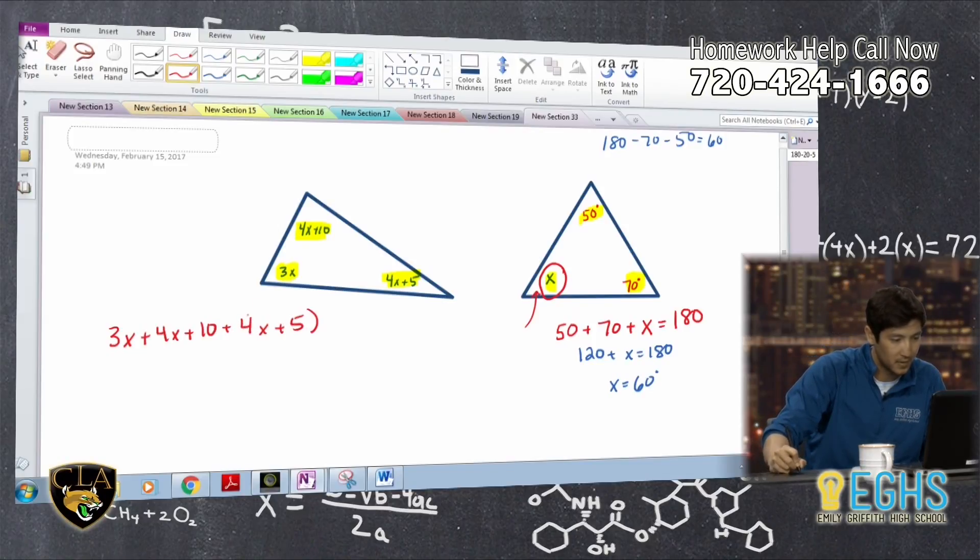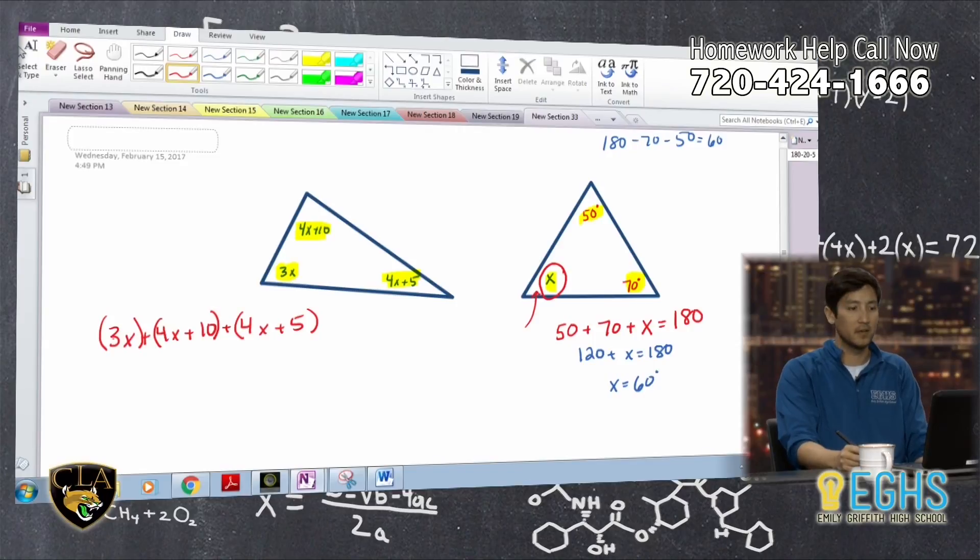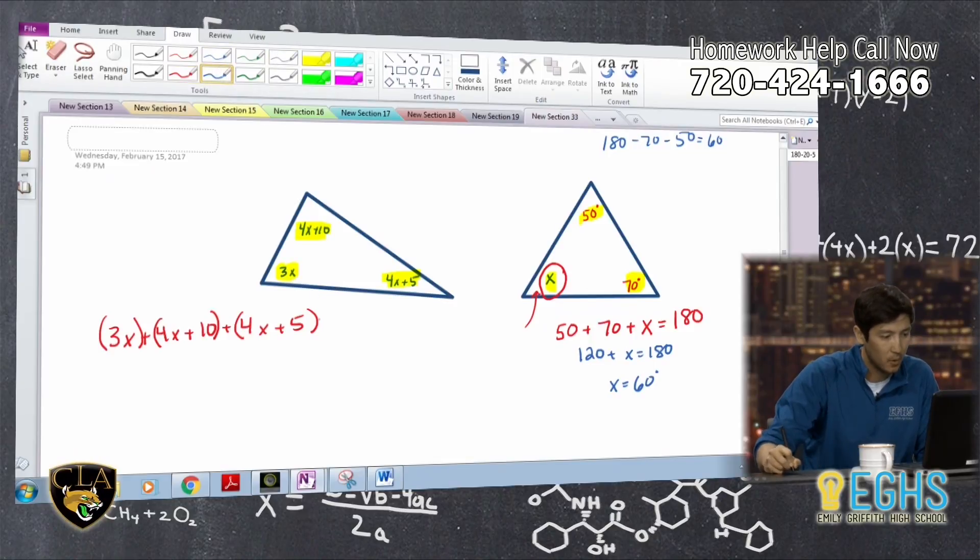All this is, let me put these in parentheses to make it a little bit more clear. All that it is is really these three angles added together. And again, we've got some expression, so it looks more complicated, but the process is exactly the same. And we know that these should add up to 180 degrees.